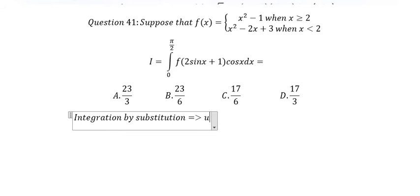So we put u equal to 2sin x plus 1, du equal to 2cos x dx. Because we don't have the 2, so we divide both sides by 2.